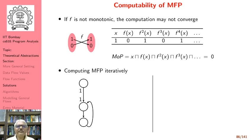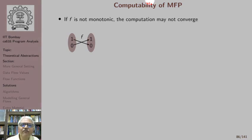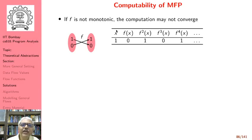Consider an example where flow function F maps 1 to 0 and 0 to 1 — clearly non-monotonic. Looking at successive computations: if x is 1, then F(x) = 0, F²(x) = 1, F³(x) = 0, F⁴(x) = 1, and so on.